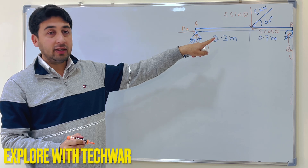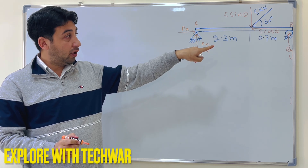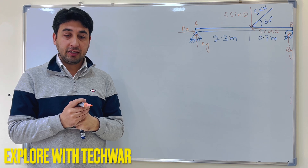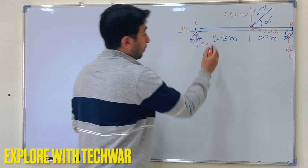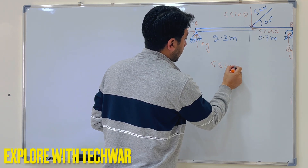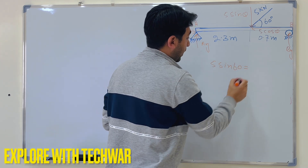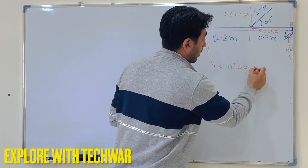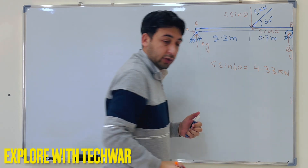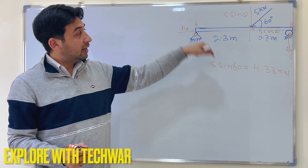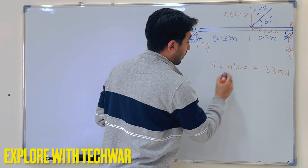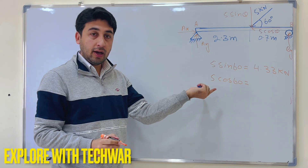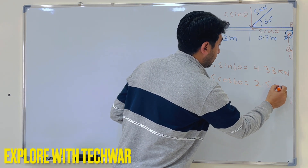There are now two forces acting at the same point: 5 cos theta to the right and 5 sin theta acting downward. With theta equal to 60 degrees, 5 sin 60 equals 4.33 kilonewtons acting downward, and 5 cos 60 equals 2.50 kilonewtons acting horizontally.